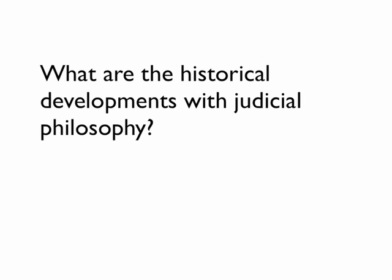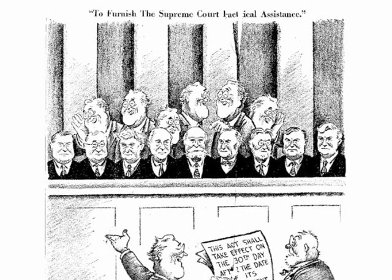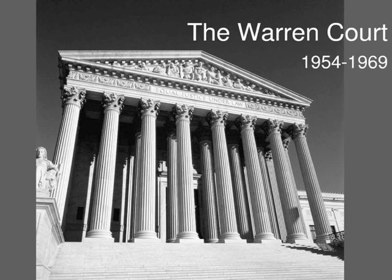What are the historical developments with judicial philosophy? Prior to 1937, liberals complained about the conservative court being too activist when it struck down various reform-minded laws, such as in Schechter Poultry Corporation v. United States, 1935. FDR responded with his court-packing attempt in 1938 and failed, but the court, in its famous switch in time that saved nine, began to accept New Deal legislation. Now it was the conservatives who began to complain about the liberal court being too activist, especially with the advent of the Warren Court, 1954 to 1969.